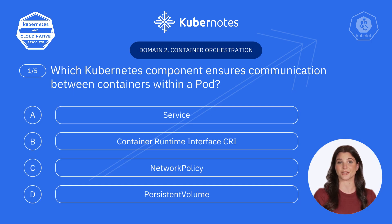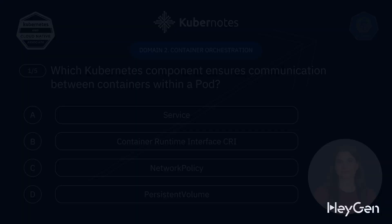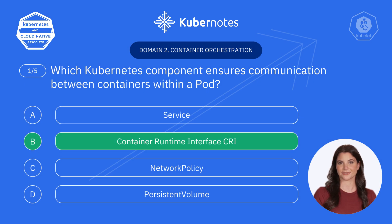Question one: Which Kubernetes component ensures communication between containers within a pod? A. Service. B. Container Runtime Interface (CRI). C. Network Policy. D. Persistent Volume. The answer is B. Container Runtime Interface (CRI) enables Kubernetes to manage container operations like creating and communicating between containers.